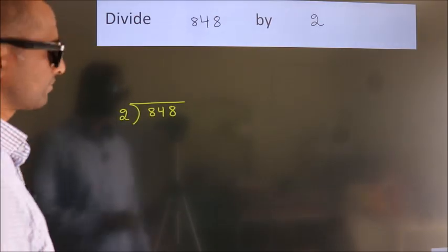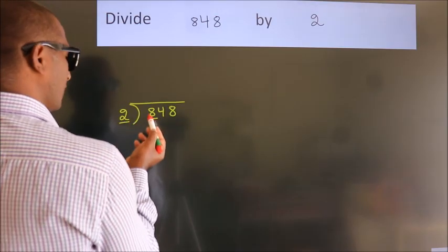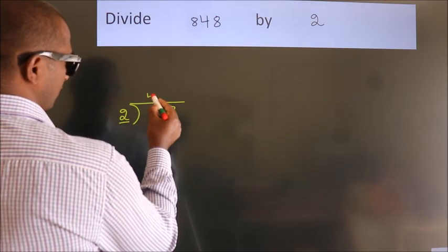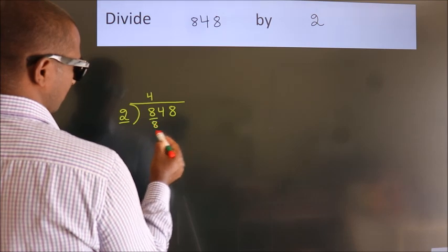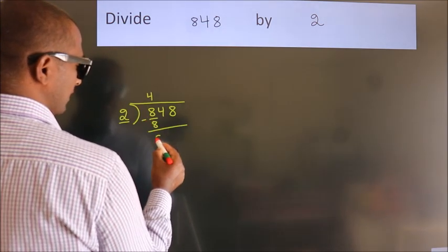Next, here we have 8, here 2. When do we get 8 in 2 table? 2 fours, 8. Now we should subtract, we get 0.